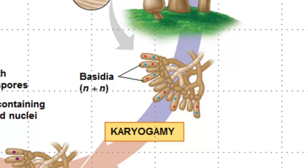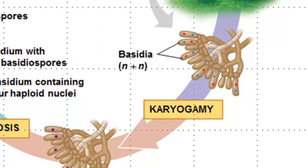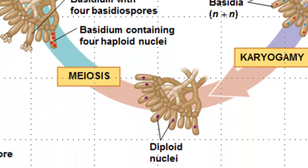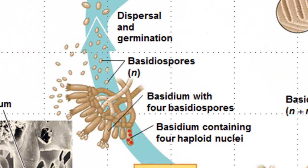The basidiocarp gills are lined with terminal dikaryotic cells called basidia. Karyogamy in the basidium is going to produce diploid nuclei, which will then undergo meiosis. Each diploid nucleus will yield four haploid nuclei, each of which will develop into a basidiospore. When the mature basidiospores are ejected and dispersed by the wind, they'll find a suitable environment in which they can germinate and grow into the short-lived haploid mycelia.